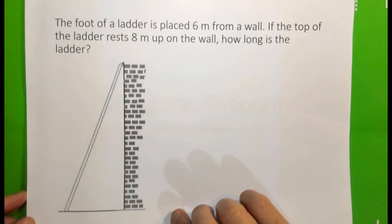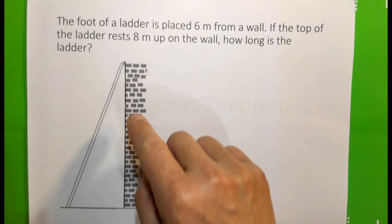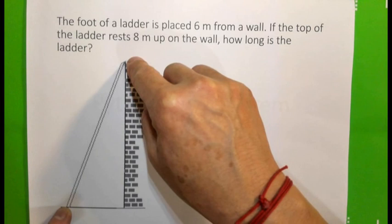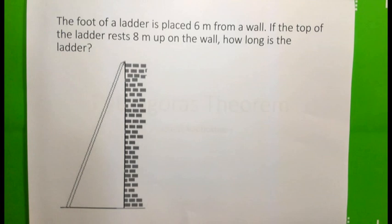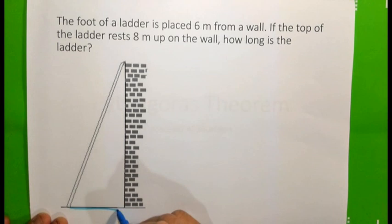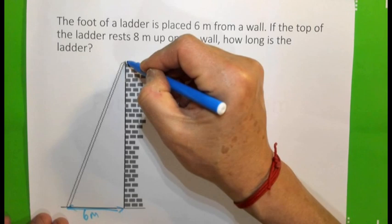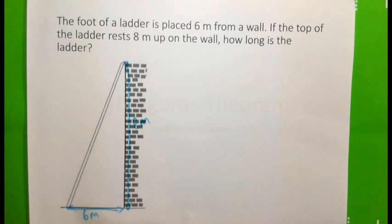The first one: we are looking at when a ladder is resting on the wall. We know the distance of the base of the ladder to the wall and the top of the ladder on the wall. Reading the question: if the foot of a ladder is placed 6 metres from a wall, so therefore, that is actually 6 metres, and if the top of the ladder rests 8 metres on the wall...